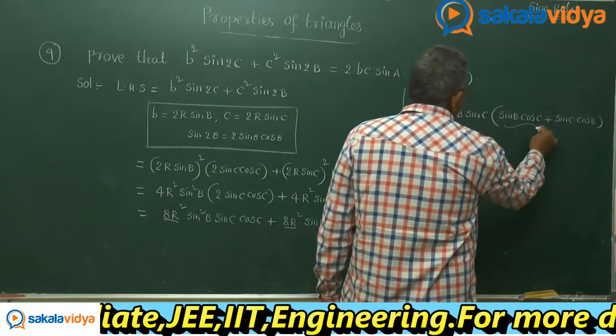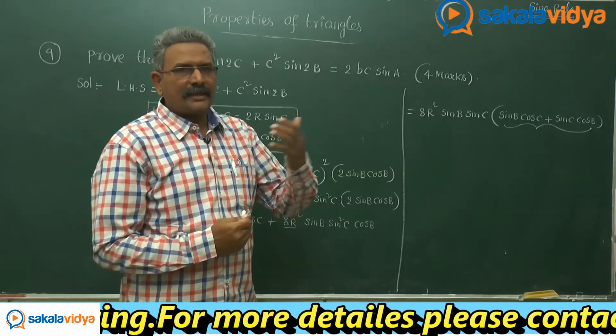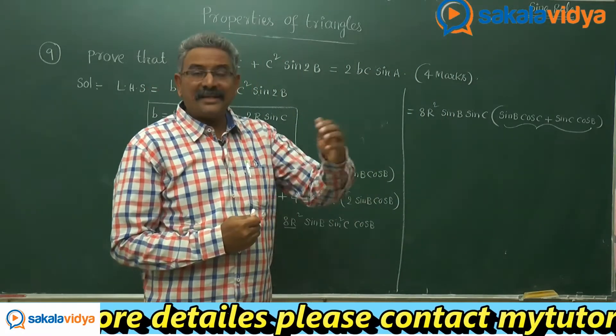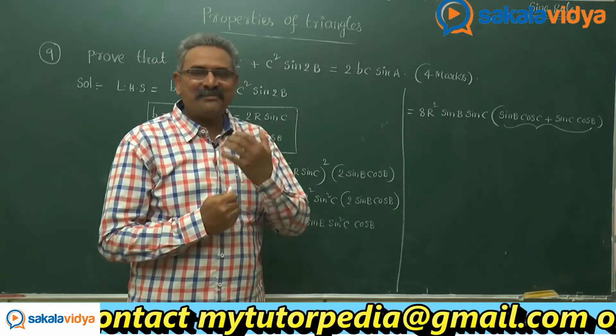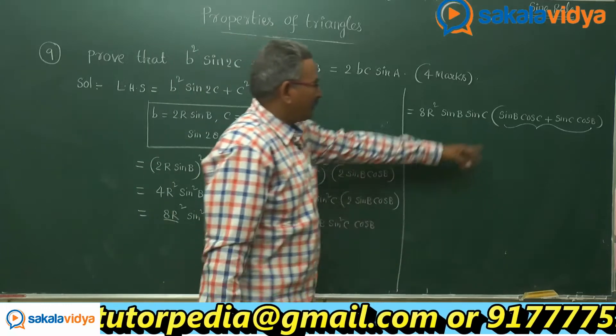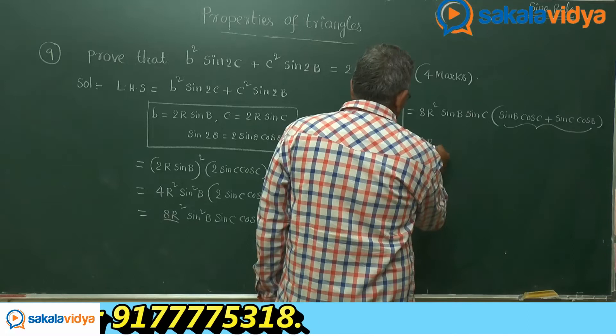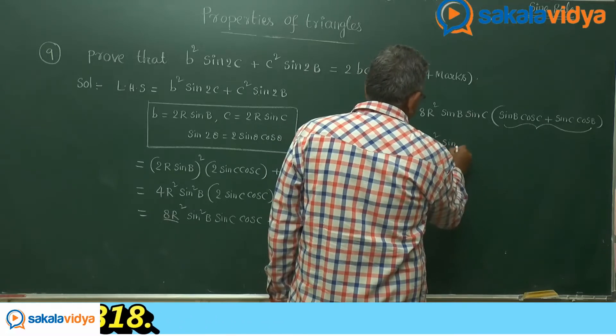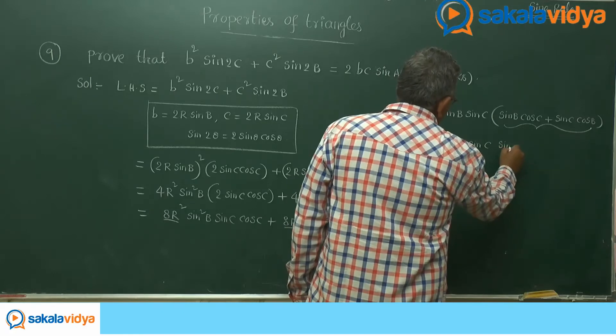Now how does it appear? It appears to be rather sin a cos b plus cos a sin b. You may be recollecting the formula. That is nothing but sin of a plus b. This is nothing but sin b plus c. 8r squared sin b sin c sin of b plus c.